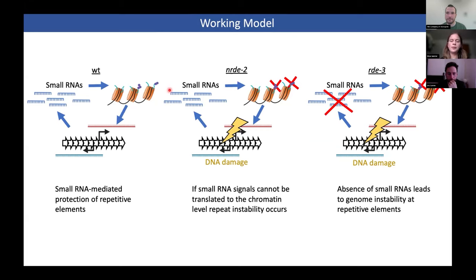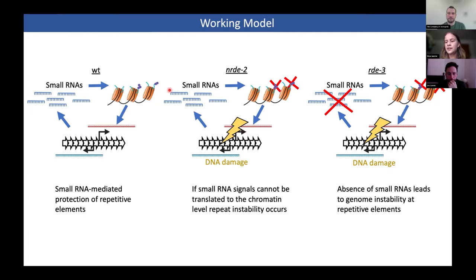We can only speculate — we don't exactly know the mechanism right now. But one possibility would be that if you lose some of these chromatin modifications that would usually induce heterochromatin in these regions, during DNA replication or transcription we would have some early structure formation, for example, which would then induce some form of DNA damage. By DNA repair mechanisms, through recombination, we would then lose some copies of the repetitive DNA. That could be one possibility.